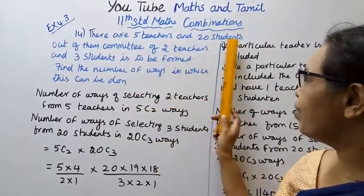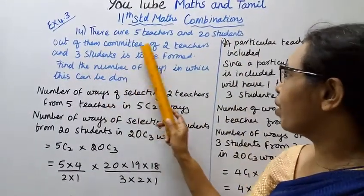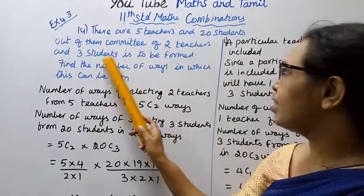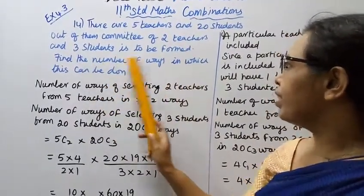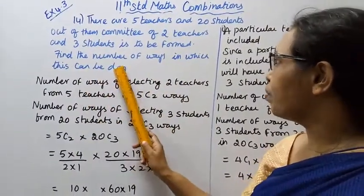There are 5 teachers and 20 students. Out of them, a committee of 2 teachers and 3 students is to be formed. Find the number of ways in which this can be done.